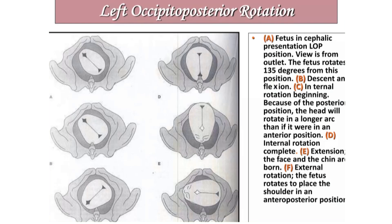We can compare the normal left occipital anterior mechanism with the abnormal mechanism of occipital posterior position. In this picture, the left occipital posterior rotation is shown. The fetus is in cephalic presentation with position left occipital posterior. The fetus rotates 135 degrees — that is 3/8 of the circle. Because of the posterior position, the head rotates in a longer arc than if it were in an anterior position. Internal rotation completes, extension of the face and chin occurs, and then external rotation places the shoulders in an anterior-posterior position.